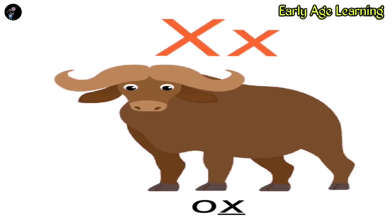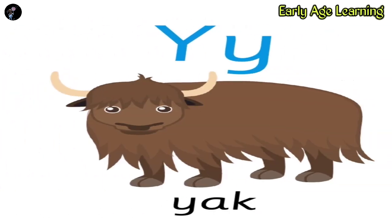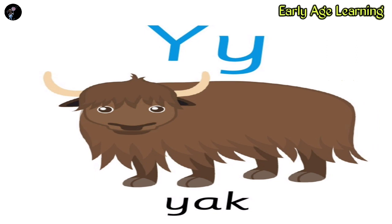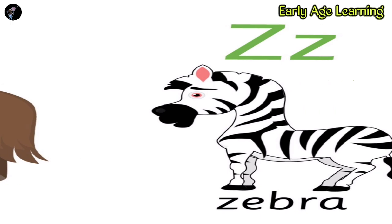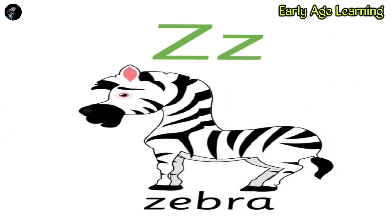X. X for Ox. O-X. Ox. Y. Y for Yuck. Y-A-K. Yuck. Z. Z for Xebra. Z-E-B-R-A. Xebra.